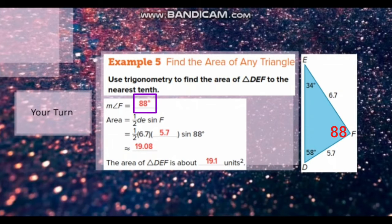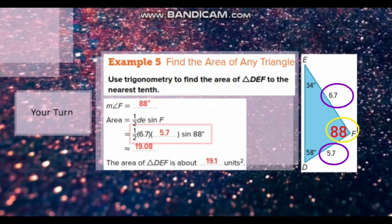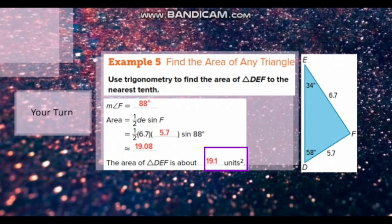Now we can find the area of this triangle because we have two sides and the included angle. That is equal to half times 6.7 times 5.7 times sine 88 degrees. The area will be 19.1 units squared.